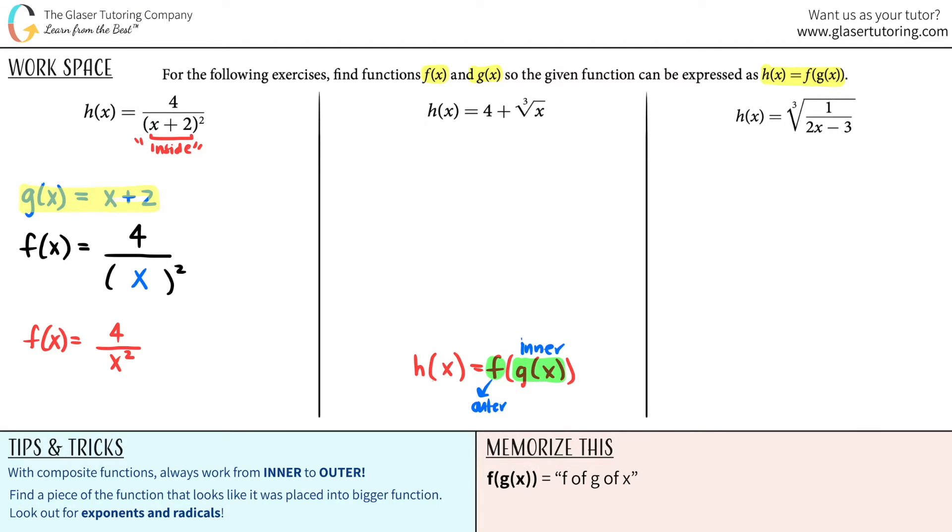I don't need parentheses if I'm just going to say x. And those are your two functions. So the inside function was g of x, x plus 2. And the outer function was 4 divided by x squared. And that's it. Pretty easy, right? So always think of what is inside or trapped inside something.